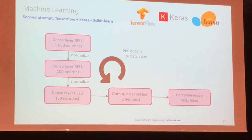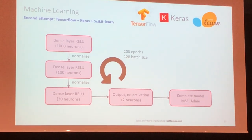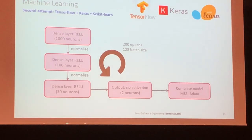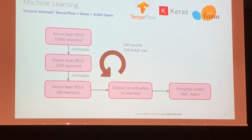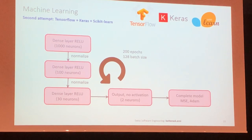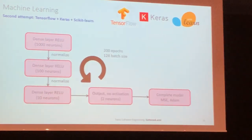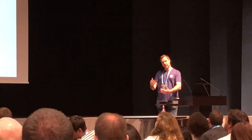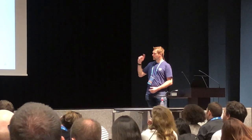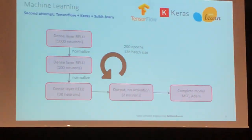Our second attempt used Google TensorFlow with Keras and scikit-learn, where we created a multi-layer neural network with a standard configuration. We trained it again with the same data split approach and 200 iterations. This time it did provide a two-variable output, giving predictions for both PM2.5 and PM10 micrometer particles.